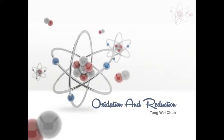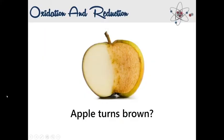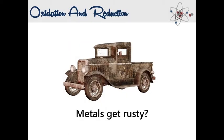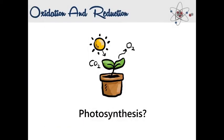Hi! Today we are going to talk about oxidation and reduction. In your daily life you may have wondered why an apple turns brown, or why metals get rusty, or what is happening in the process of respiration and photosynthesis. All of these are examples of oxidation and reduction. After you have learned through this chapter, you can understand why all these real-life examples happen.